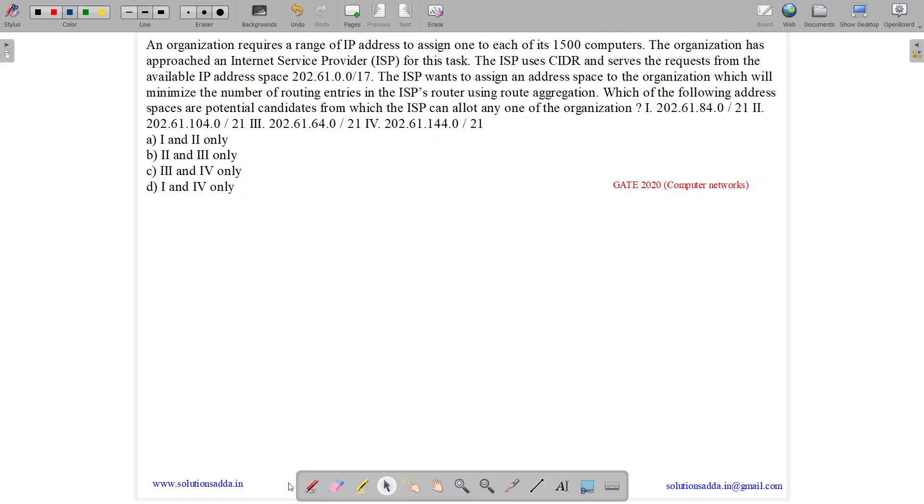This question belongs to computer network subject and was asked in GATE CSE 2020. The question states an organization requires a range of IP addresses assigned to one of its 1500 computers.